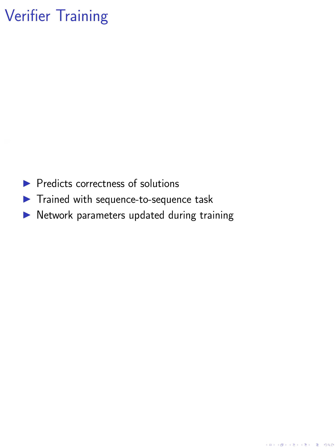We also train a verifier to predict whether a generation is a correct solution to a given question. This verifier is trained with a sequence-to-sequence task using binary labels, indicating whether a generation leads to the correct numerical answer. The verifier model is initialized to be the same as the SLM and has an additional prediction head shared across all positions. All network parameters are updated during verifier training.